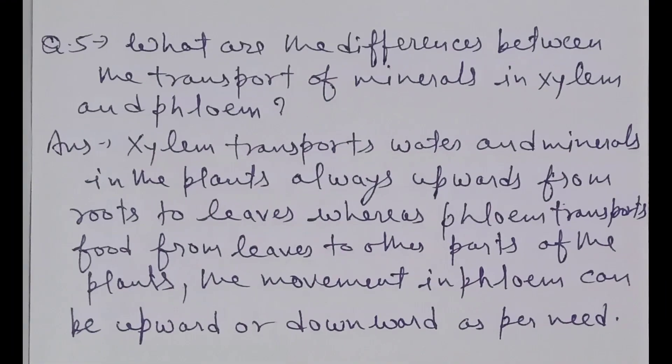What are the differences between the transport of minerals in xylem and phloem? Xylem transports water and minerals in the plants always upward from roots to leaves, whereas phloem transports food from leaves to other parts of the plants. The movement in phloem can be upward or downward as per need.